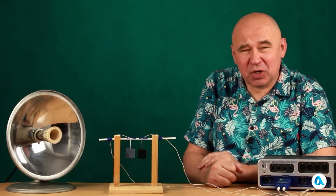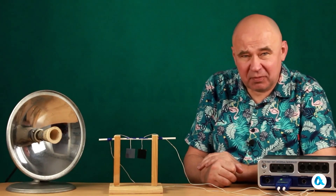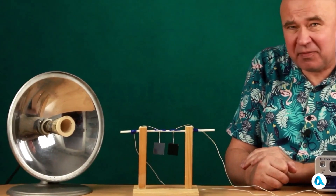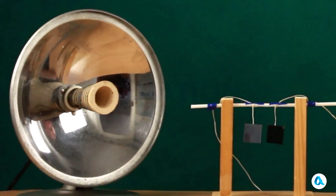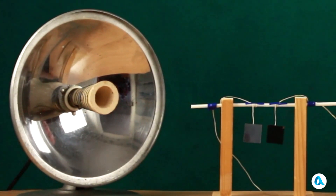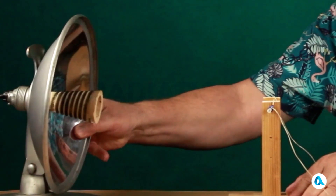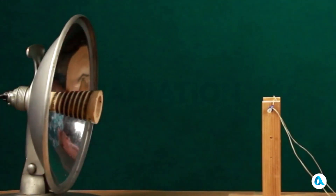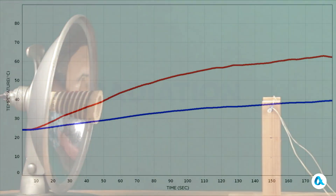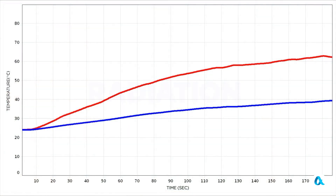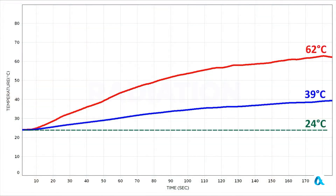Now I am starting the experiments with radiation. Here I have two identical metal plates hanging — one is a mirror and the other is charred black. There is a heater and a reflector. I position these plates towards the heater and switch it on. After three minutes, the smoked plate heated up to 62 degrees Celsius, while the mirror one only reached 39 degrees.